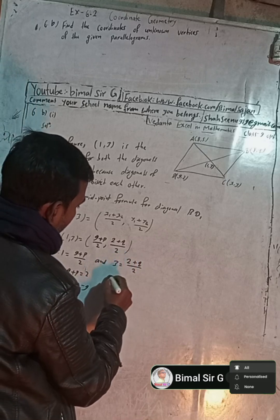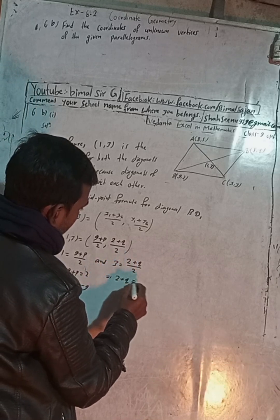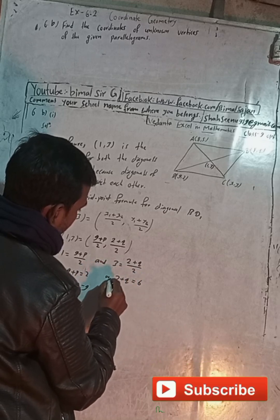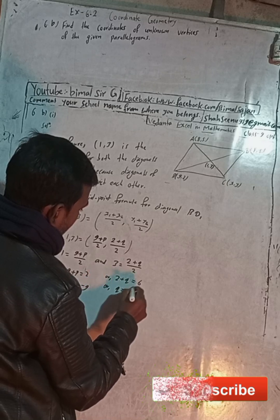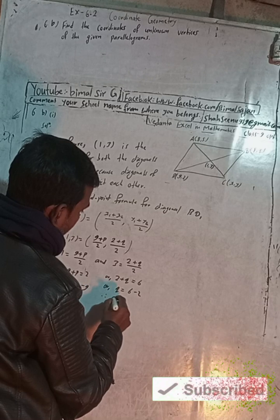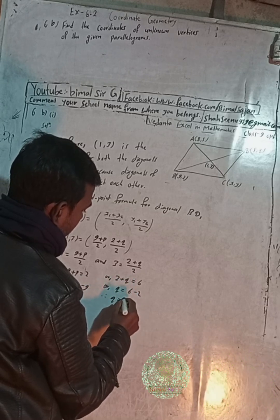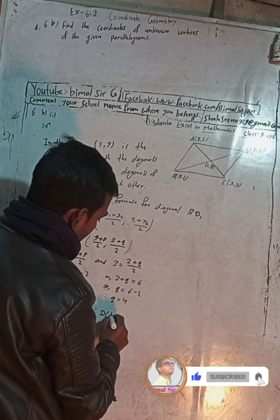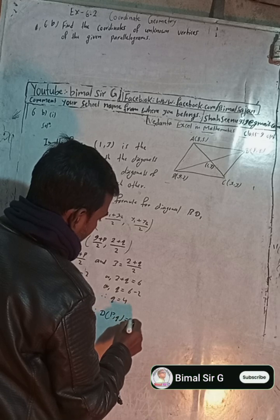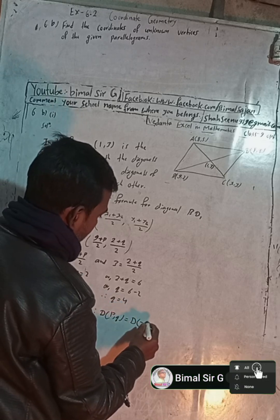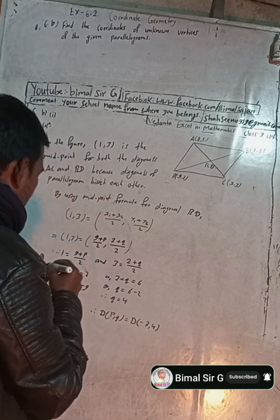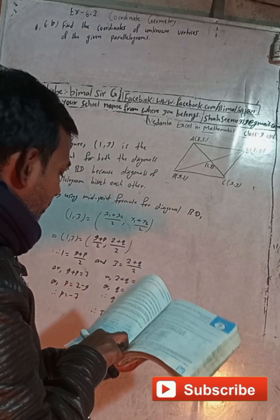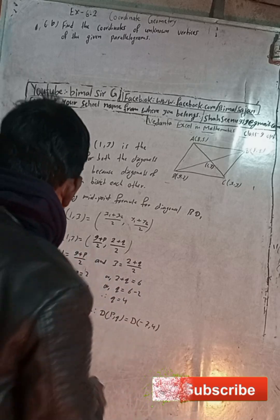Solving: 2 plus q equals 6, therefore q equals 6 minus 2, so q equals 4. And 9 plus p equals 2, therefore p equals 2 minus 9, so p equals minus 7. Therefore D equals p comma q equals minus 7 comma 4. The answer is correct.